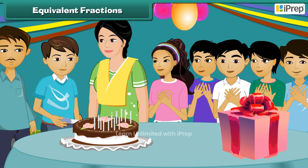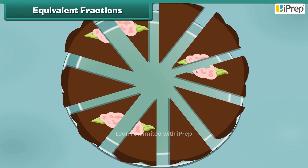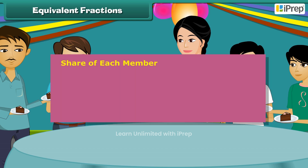Equivalent Fractions. Let us take a second look at Rishabh's birthday cake. It is divided into ten equal parts. Suppose none of Rishabh's friends is interested in the cake. Hence, Rishabh offers two pieces of the cake to each member of his family. Each member gets 1 by 10 plus 1 by 10.